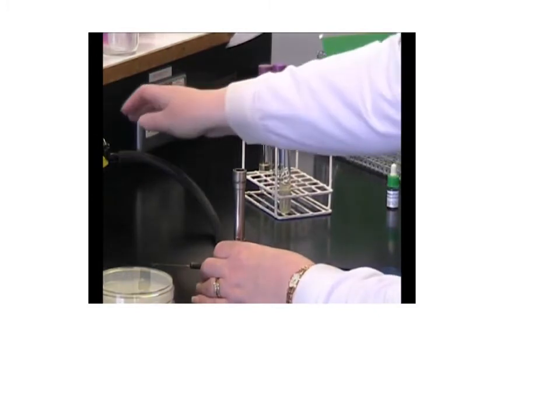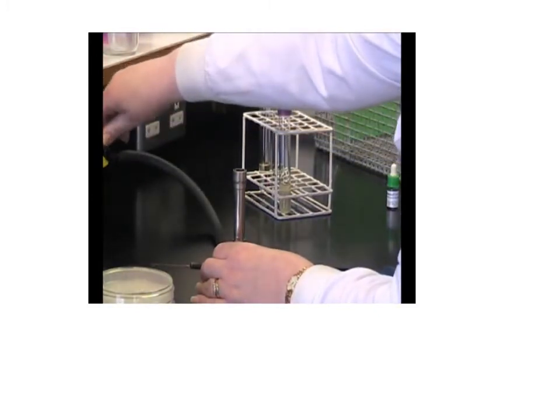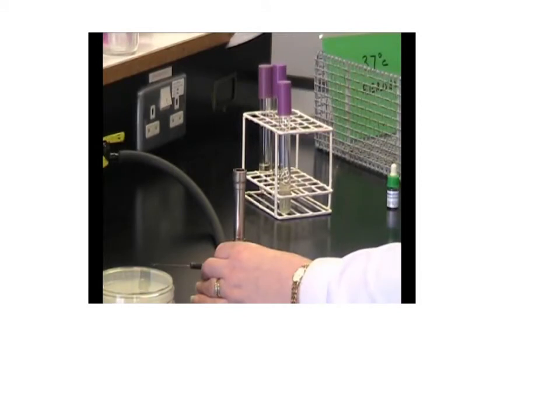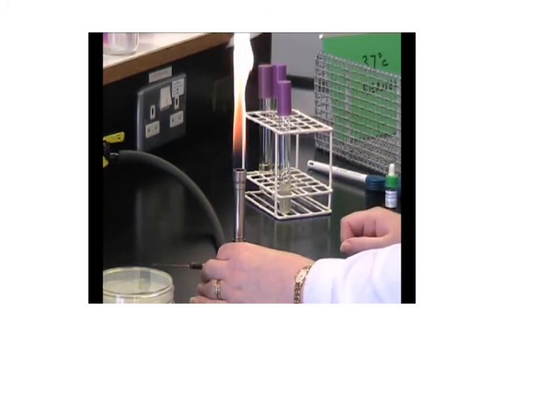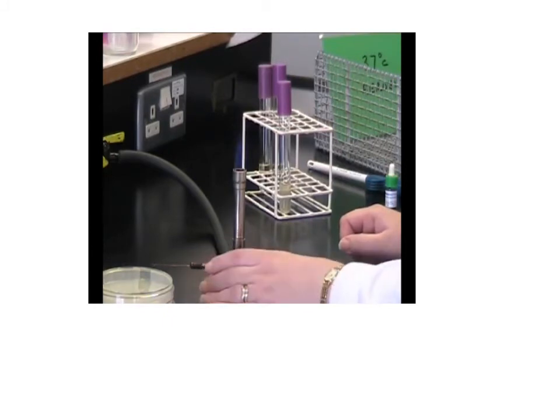diluting out the bacteria till you get single cells on the surface of the agar. These single cells will then each grow up when incubated to produce an isolated colony. These single isolated colonies are all derived from one cell, so you're working with a clone or pure culture. In this video you'll learn how to streak out bacteria and work aseptically. First, light your Bunsen burner. Turn on the gas, make sure the air hole is closed, and use the gas lighter. When the air hole is closed, the flame will be cold and yellow.